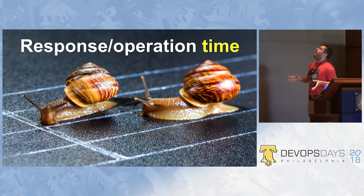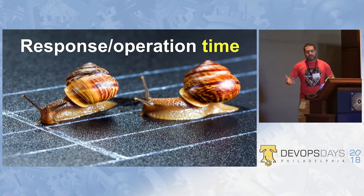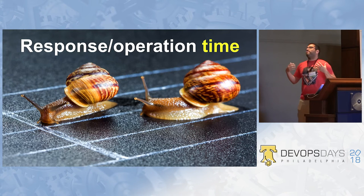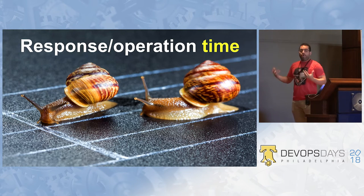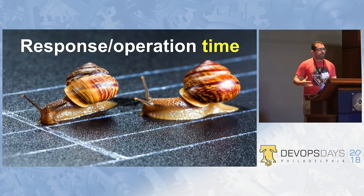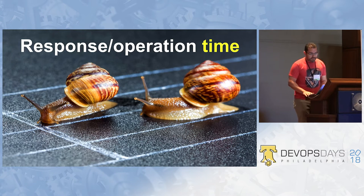And response or operation time. Whether this is a request-response application or some kind of backend application working from a queue, you should always be collecting the time it takes for all of this to happen. You might say it's really fast — but can you prove it's really fast? If you don't have the metrics that back up the decisions you're making, then you should be collecting all of this data.